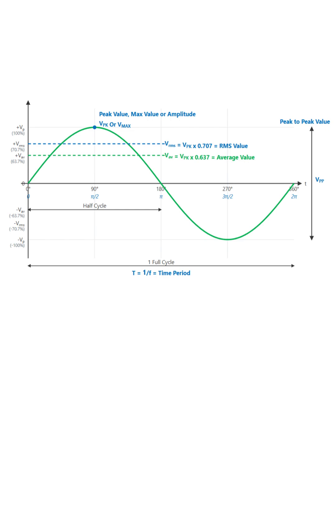Finally, we have the most common and useful measurement, the RMS value, which stands for root mean square. The RMS value is the effective value of the AC voltage. It's the value that would produce the same amount of heat or power in a resistor as an equivalent DC voltage.